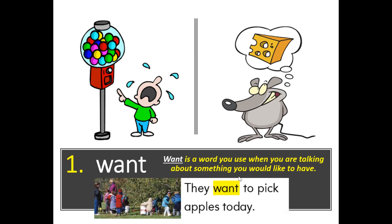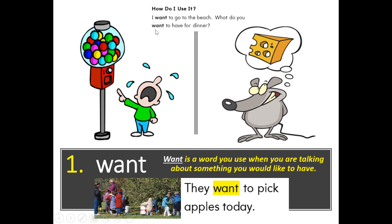Want is a word you use when you are talking about something you would like to have. Example: They want to pick apples today. How do I use it? I want to go to the beach. What do you want to have for dinner? Well, tonight I want to have tacos.